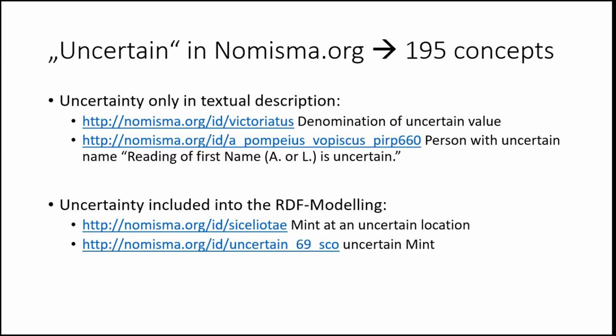Nomisma.org itself has uncertainty in 195 of the concepts it defines, and even there we're getting very different kinds of uncertainty. For example, for the victoriatus there's an argument about what the actual value of this coin was in the Roman world — so there's uncertainty in the value. There's also uncertainty in the reading of a name on a coin: is it an A or is it an L? So this URI has some uncertainty in the definition of the concept itself.